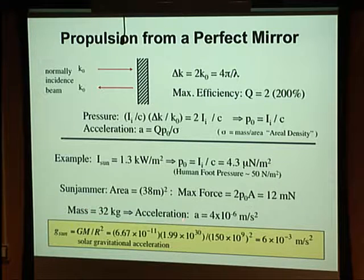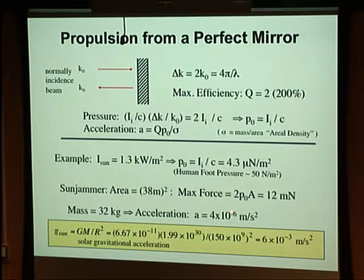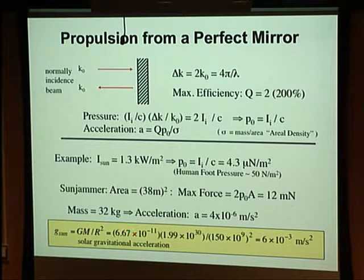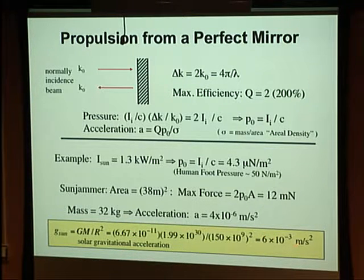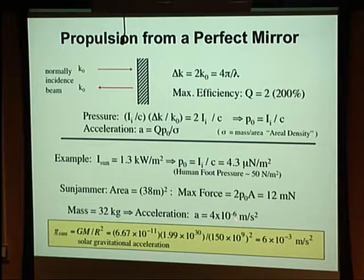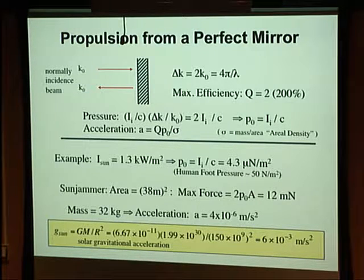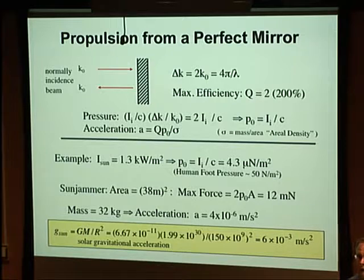The acceleration from this example is on the order of micrometers per second squared, which might seem small — but you don't compare that to g on Earth (9.8 m/s²). You compare it to the gravitational force of the sun, which is on the order of millimeters per second squared. These two things are starting to get close to each other, so if you can control your spacecraft's acceleration on the same order as the sun's gravitational attraction, you can do some very interesting missions.